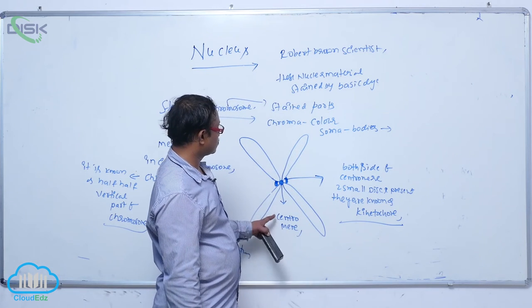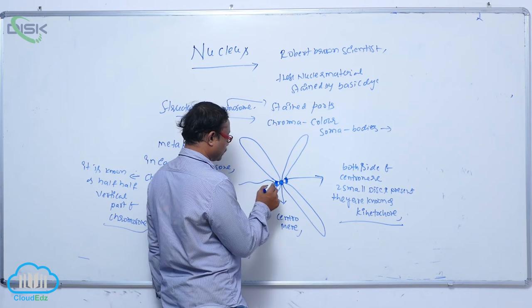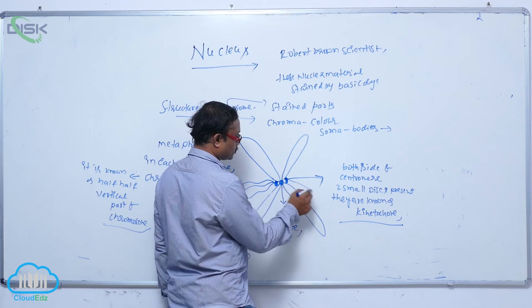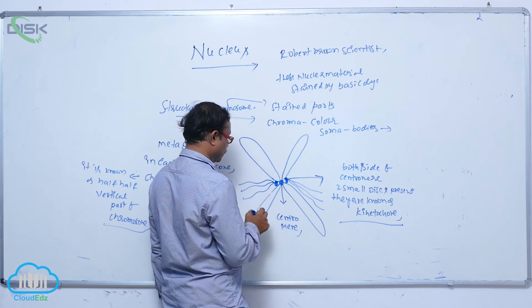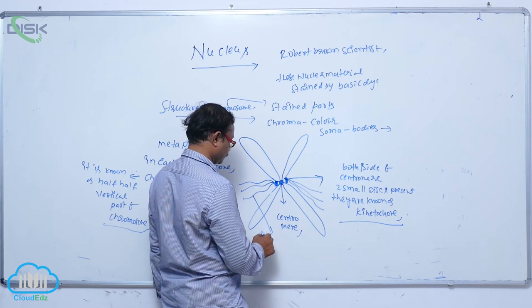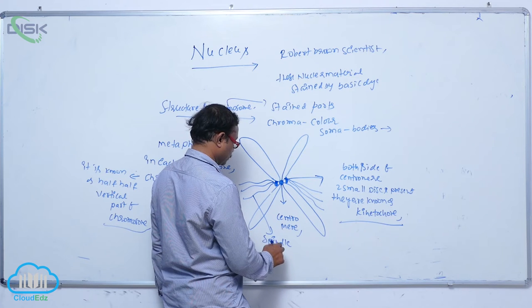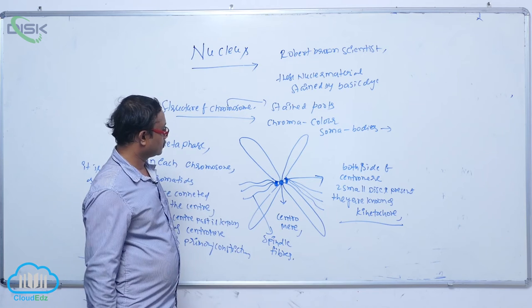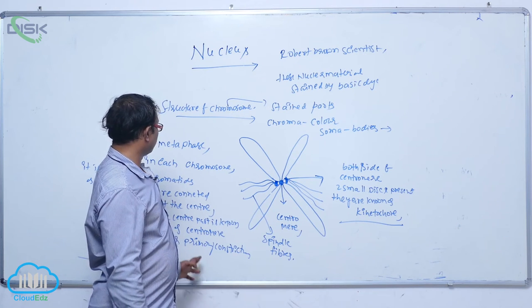At the time of cell division during metaphase, spindle fibers are connected to the centromere at the kinetochore. So spindle fibers attach to the kinetochore of the centromere of each chromosome at metaphase.